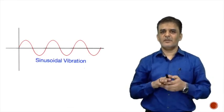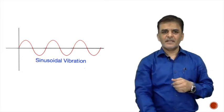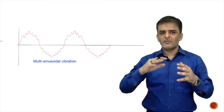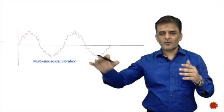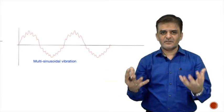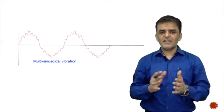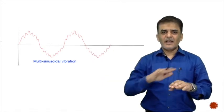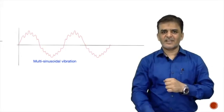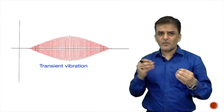Sinusoidal motion is when something goes up and down at a constant frequency. Multi-sinusoidal vibration occurs where many movements combine — for example, moving on a bumpy road, where the scooter's wheels create vibration at a higher frequency and the road profile creates another. The combination of these higher and lower frequency vibrations is called multi-sinusoidal vibration. Transient vibration is similar to a heavy alarm sound that rises and falls.